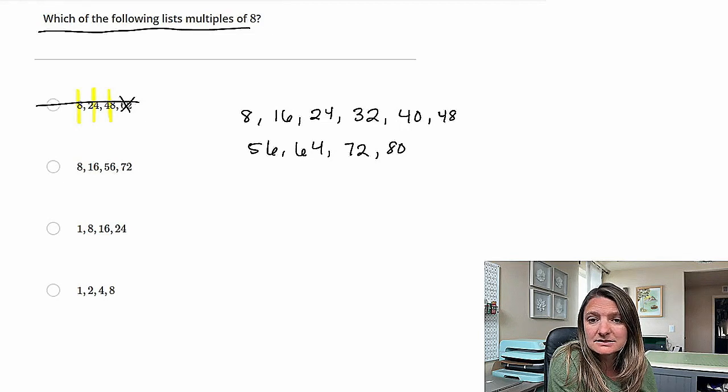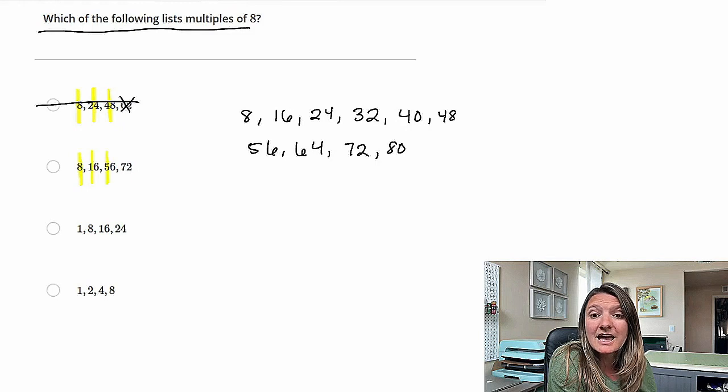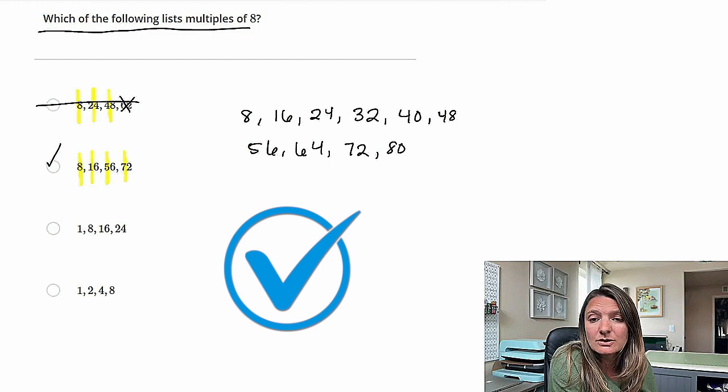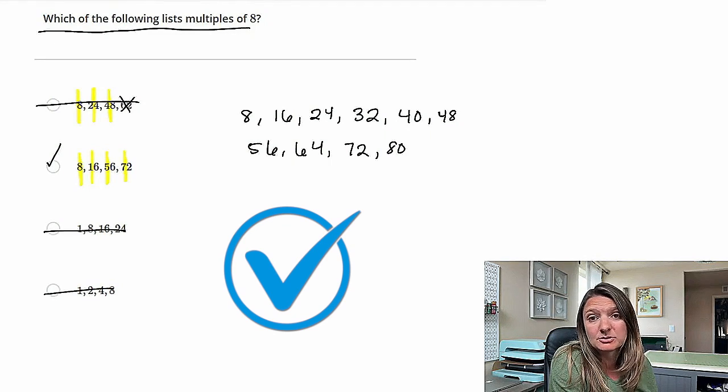B, eight. Then we have 16, 56 matches, and 72 matches. So B is the correct answer for this. You can eliminate the last two because they both start with one, and that is not a multiple of eight.